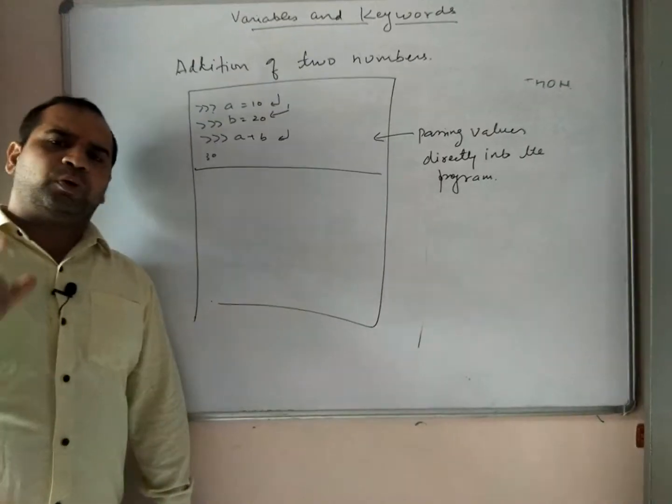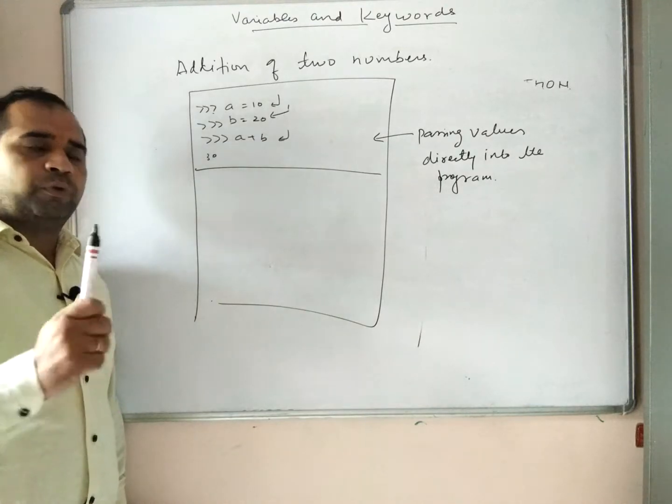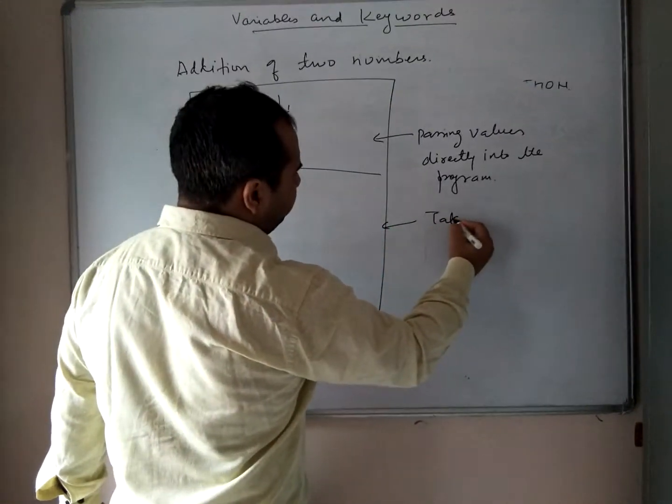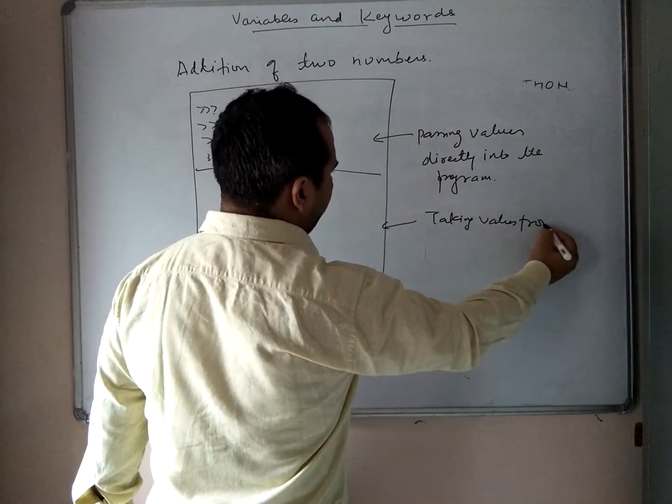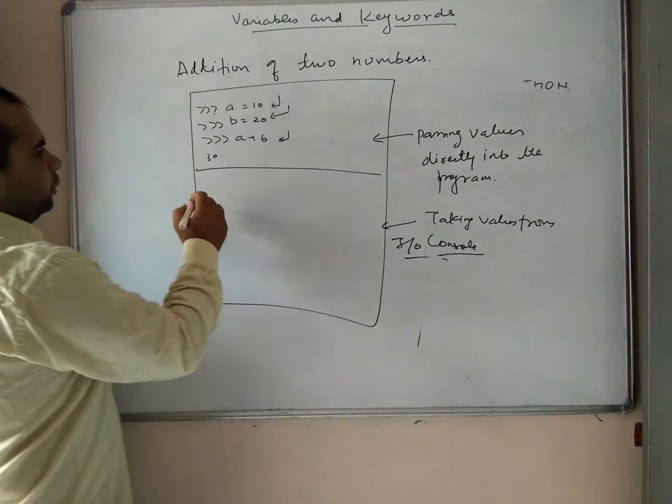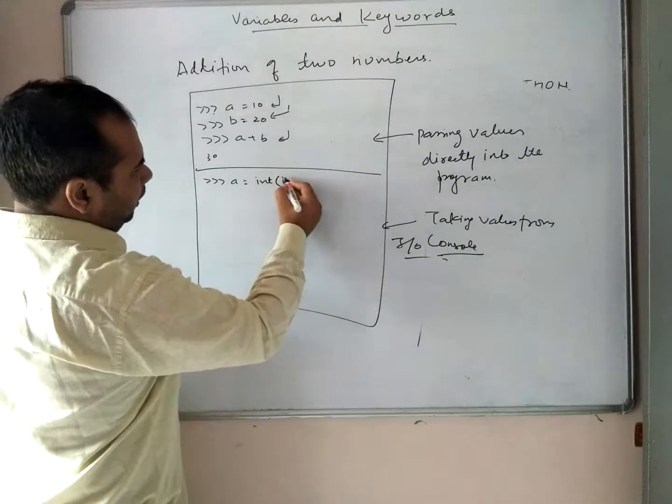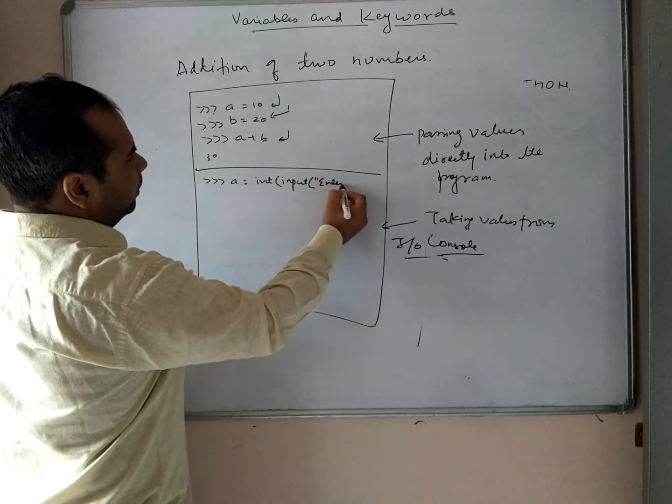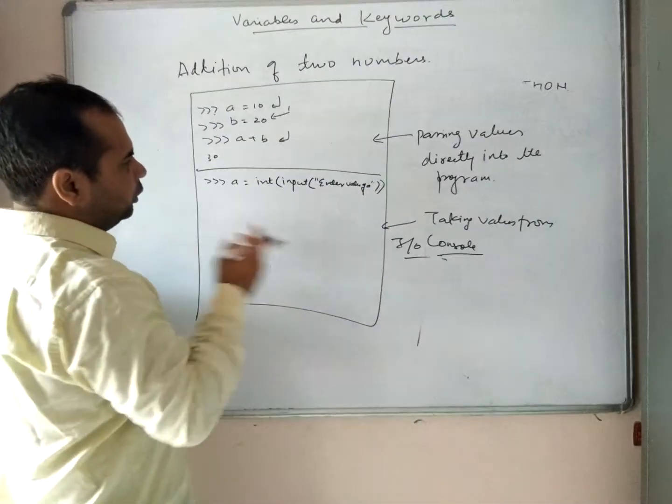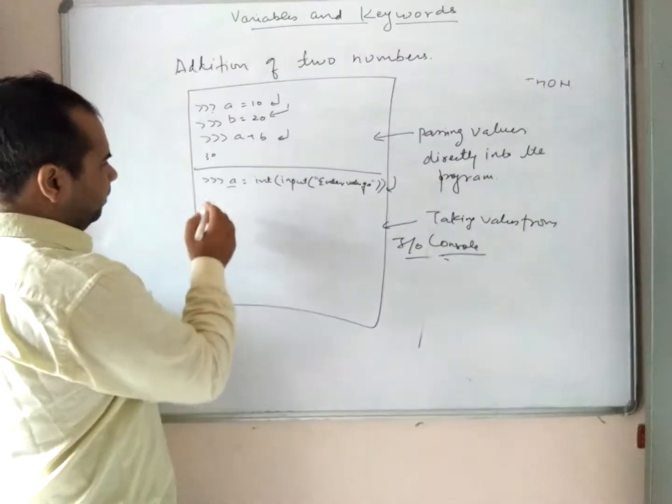The best way to learn programming is to learn it from the board, then do the practical. We cannot directly learn from the laptop or computer. Now when taking values from console input, you have to write in this way: a = int(input('Enter value of a')).